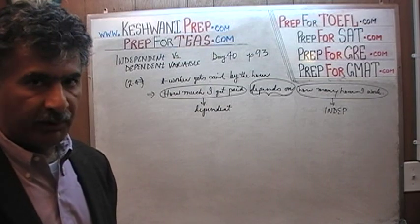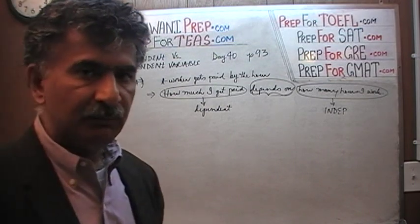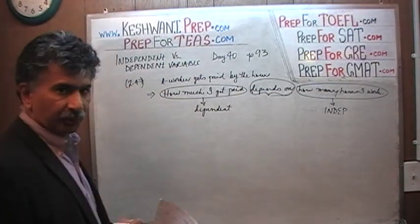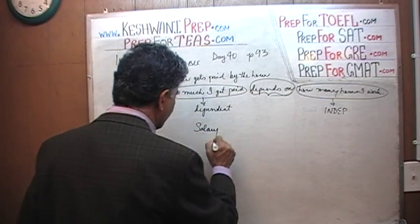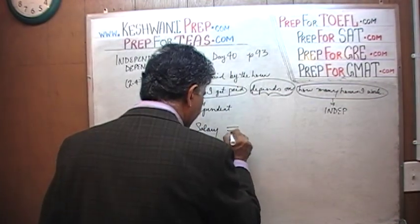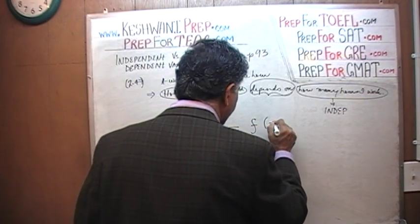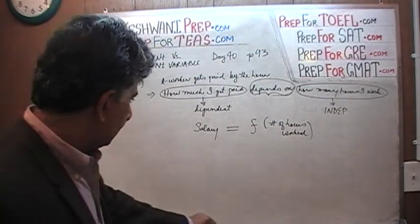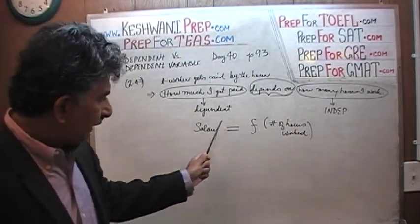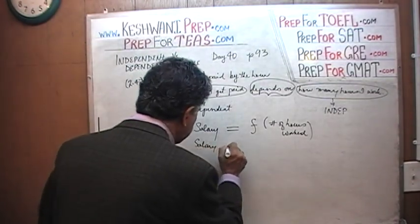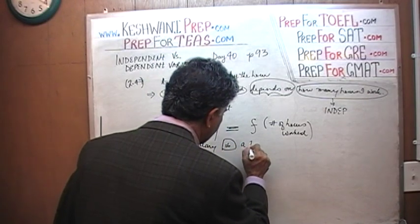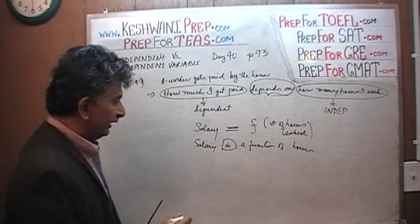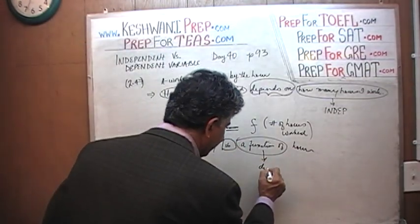Now, I don't want to make it too complicated, but in math books, if you want to express this in the symbols of mathematics — which is not required in this exam, but in case you're curious — you will see in the textbook that your salary, or wages, is written as a function of the number of hours worked. My salary equals — is a function of — hours.